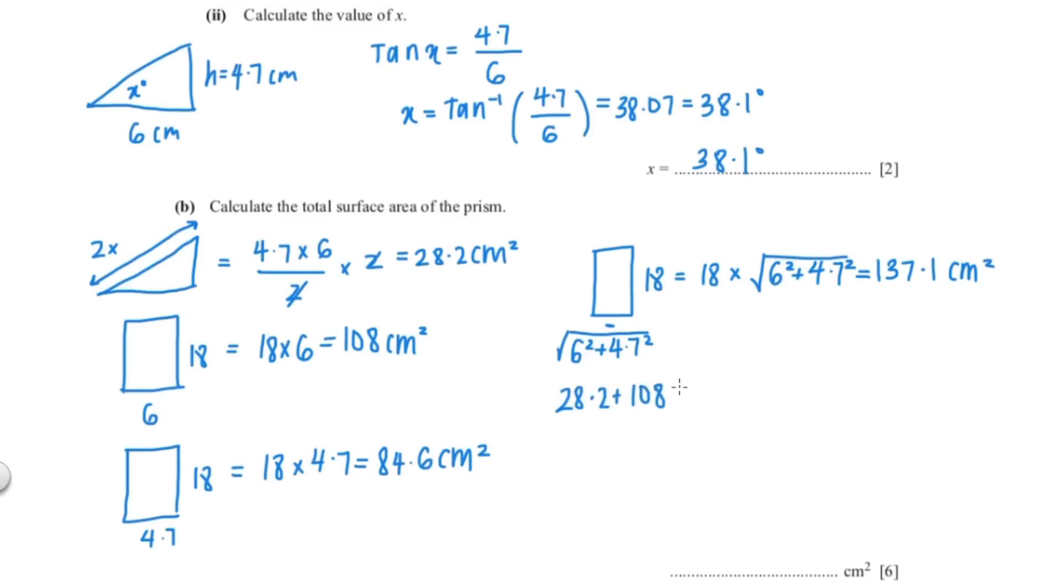So 28.2 plus 108 plus 84.6 plus 137.1 give me an answer of 357.9. And I'm going to round this to 3 significant figures which is 358 cm². So the total surface area of the prism is 358 cm².